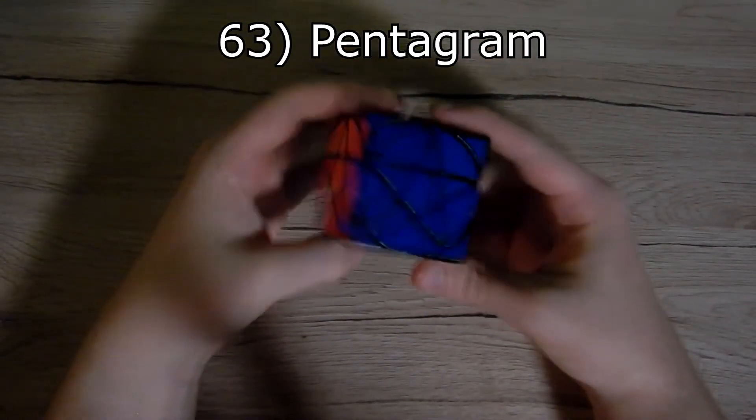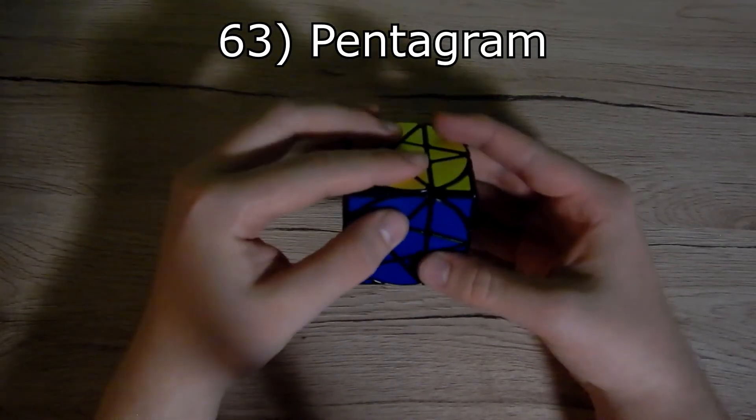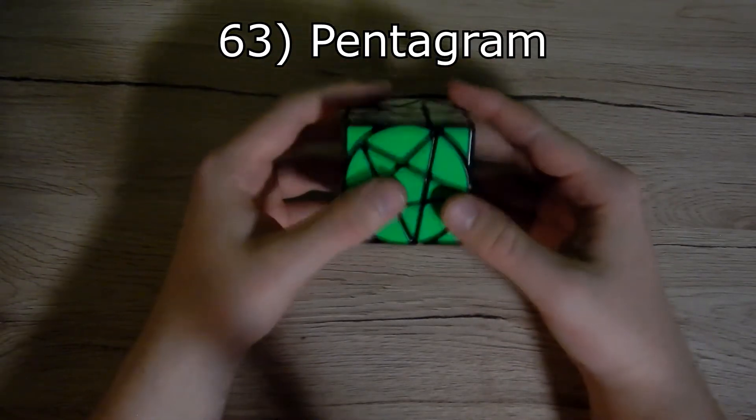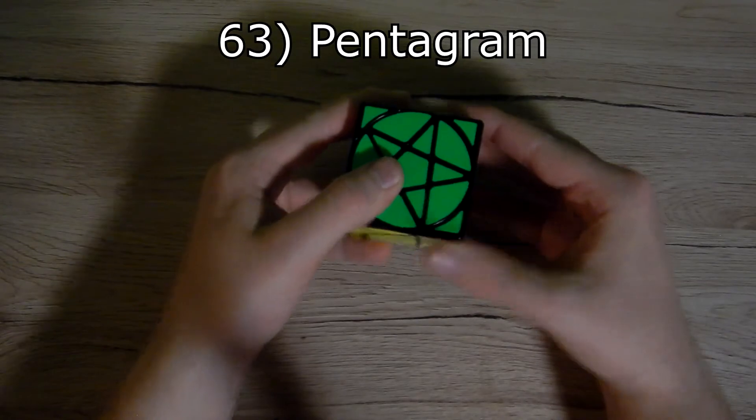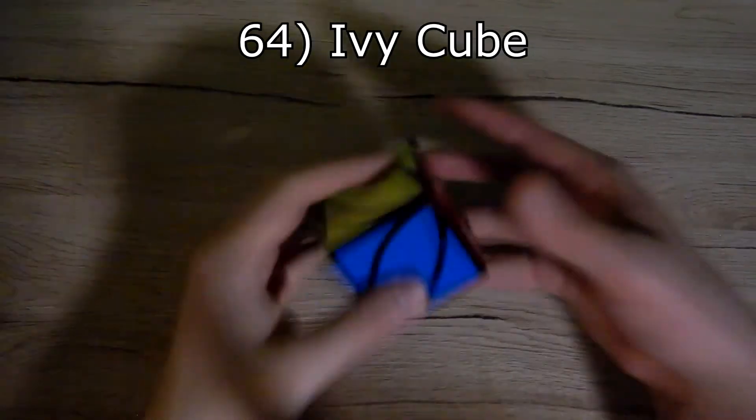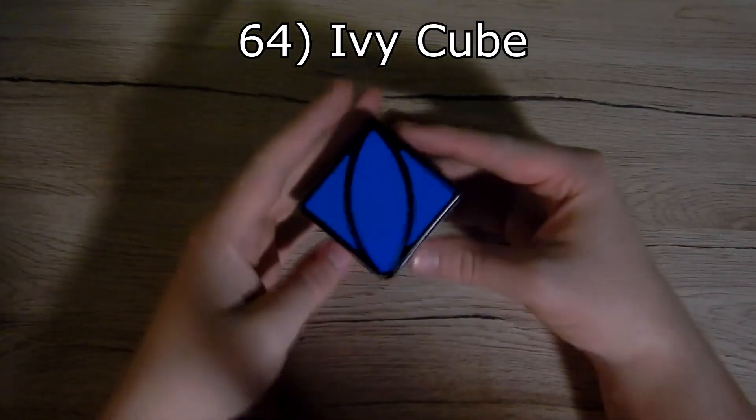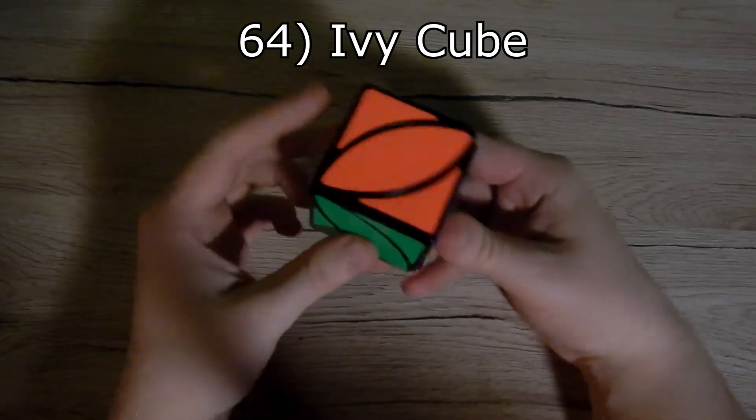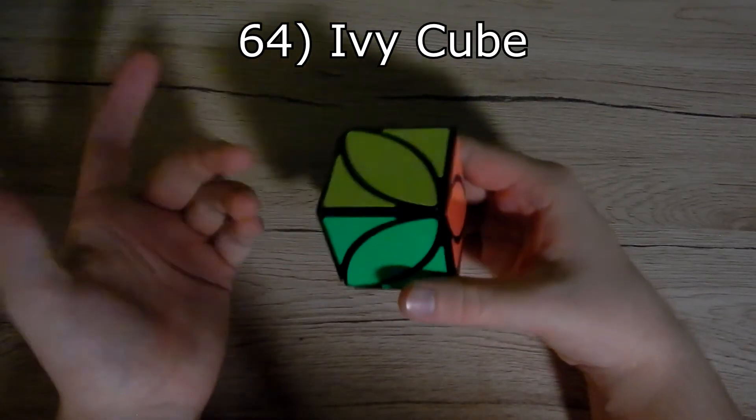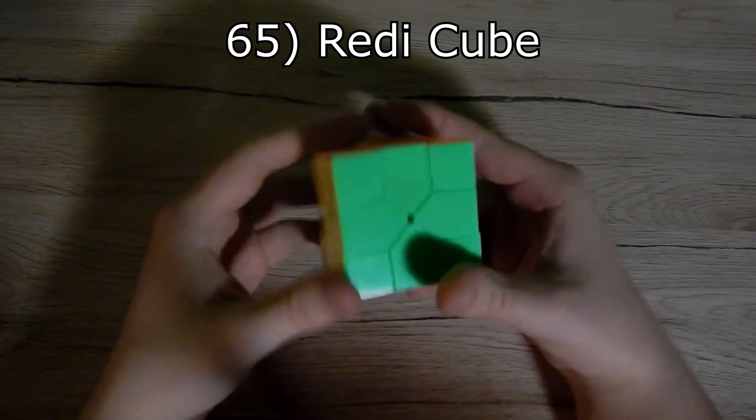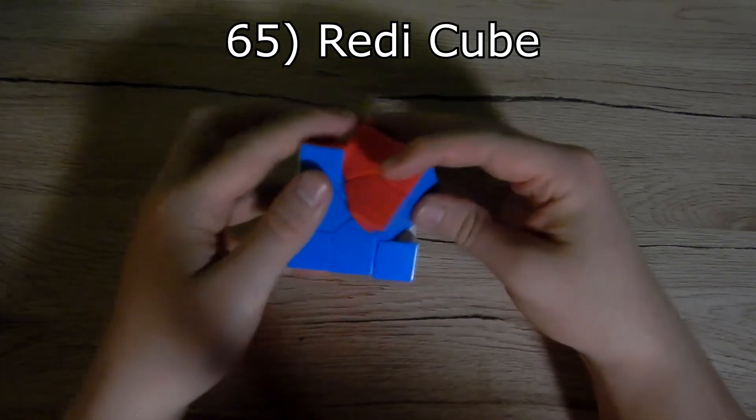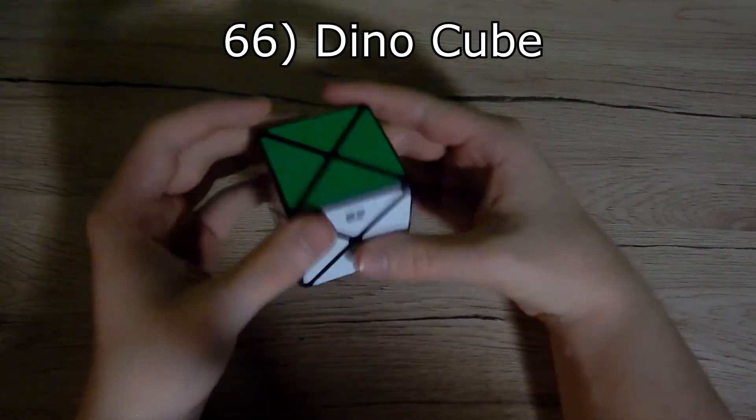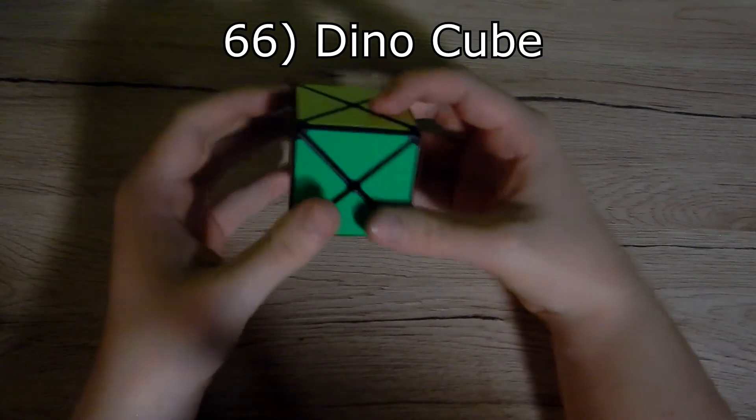This is a pentagram. It's just like 2x2 but the corners like 2x2 and you turn it like this. Next we have an ivy cube. It's very easy puzzle. It can turn like this. It is something like an easier cube. Next we have a Redi cube, and you can turn it like this, swap the edges. It's a fun puzzle and it's very easy. This is a dino cube, and it is exactly like a Redi cube except you don't have the corners.